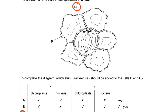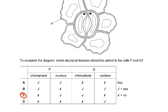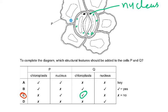Q is the guard cell, and Q will have chloroplasts in it. So we need to draw the chloroplasts inside the guard cells. The nucleus has already been drawn in Q. P is the epidermis, so you only need to draw the nucleus in that. So we need to draw the nucleus in P, and remember that epidermis cells do not have a chloroplast.